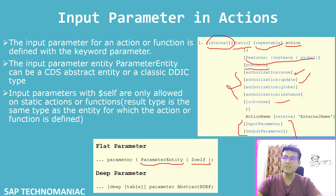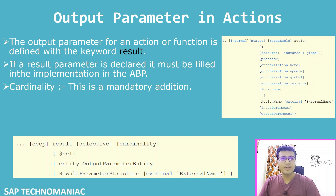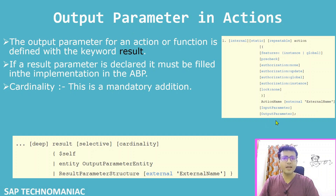If you have a table, you have to define it as a table. The keyword we have to use is the 'parameter' keyword — it should come after the action name. Then you have to give the parameter name and define the parameter type. In the same way we can declare the output parameter of a particular action.